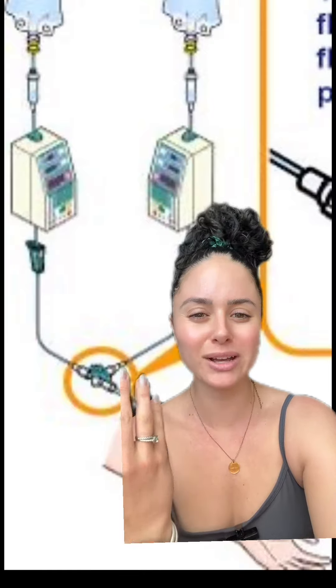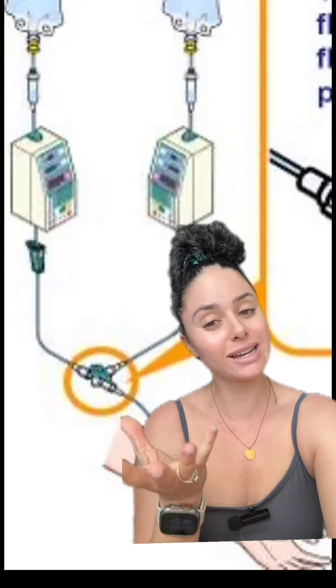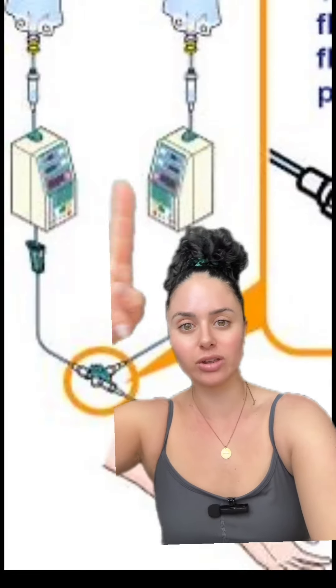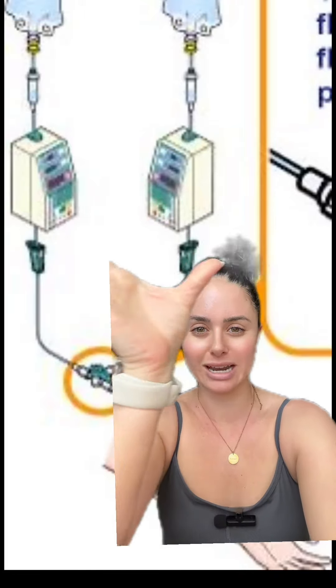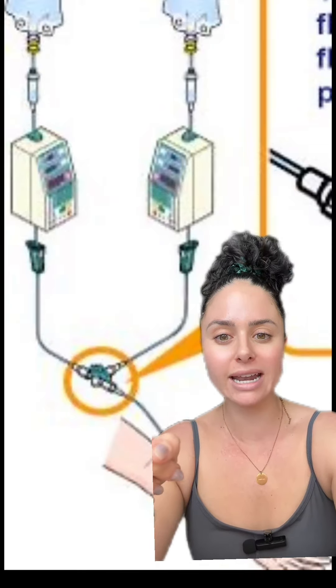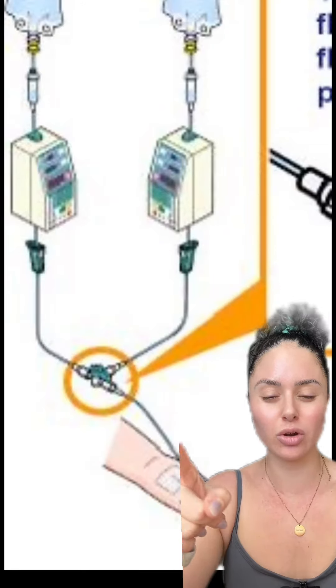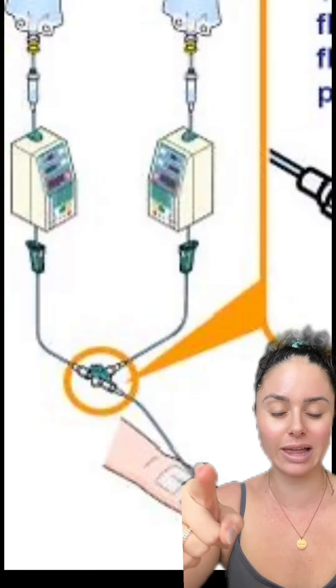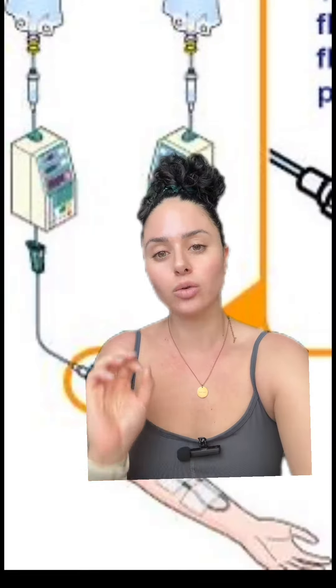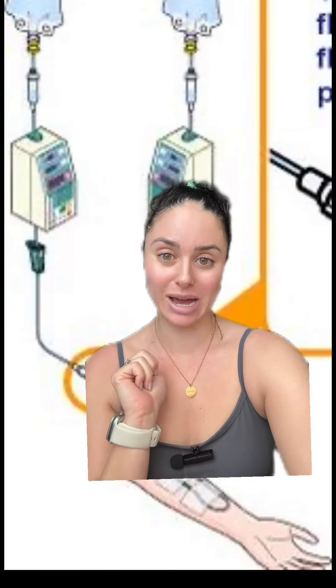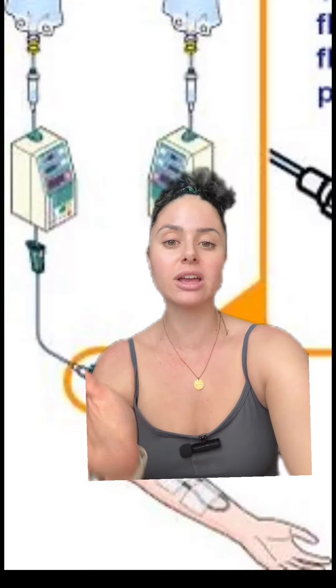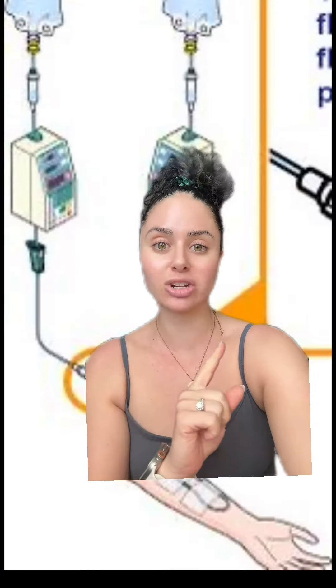Y-siding is a little different. I apologize — this image isn't the best, it's difficult to find images of Y-siding online. Y-siding is where you hang separate medications on separate pumps or channels and Y-side them together, so they end up mixing and going into the same IV or central line. Your Y-siding medications need to be compatible, and your secondary and primary infusions also need to be compatible. Whenever you're connecting medications together, whether primary and secondary or Y-siding, you need to make sure they're compatible.